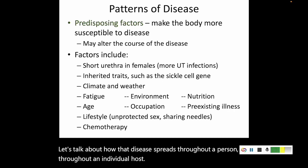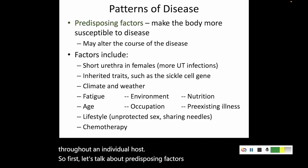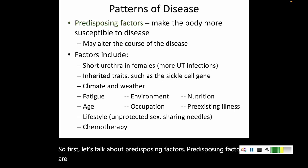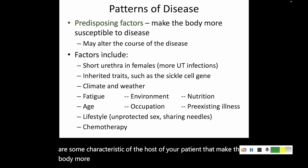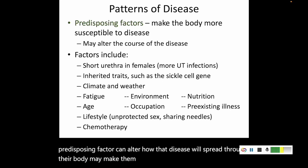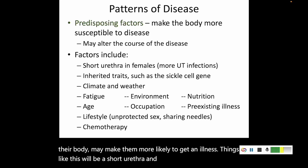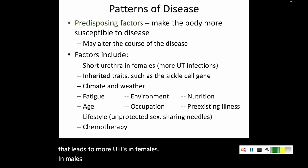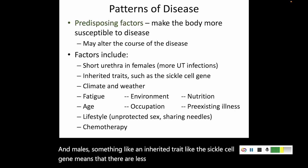First, let's talk about predisposing factors. Predisposing factors are some characteristic of the host — your patient — that make their body more susceptible or even less susceptible to a disease. A predisposing factor can alter how that disease will spread through their body. Things like a short urethra in females, simple biology that leads to more UTIs in females than in males. An inherited trait like the sickle cell gene means they are less likely to develop malaria.